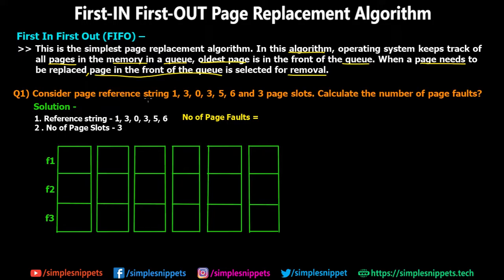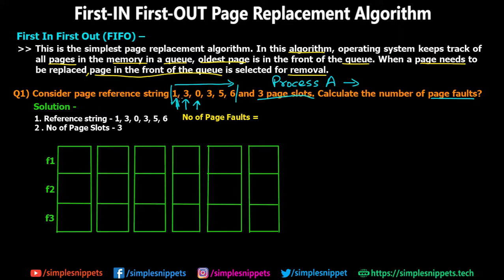Consider this example: a page reference string 1, 3, 0, 3, 5, 6 and three page slots. We have to calculate the number of page faults. The reference string represents the page names the CPU wants to execute in order. We assume one process divided into these pages. The three page slots tells us that in main memory we have only three frames available. Each vertical column in the diagram represents one iteration.